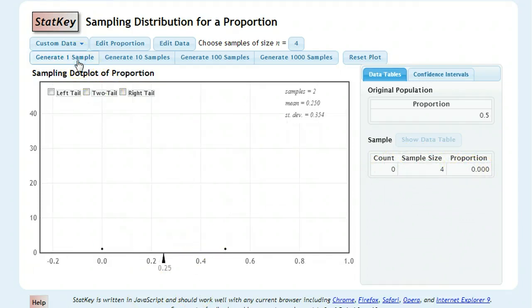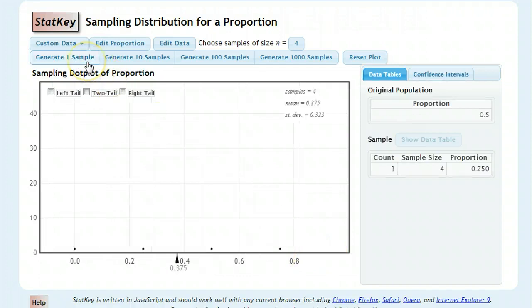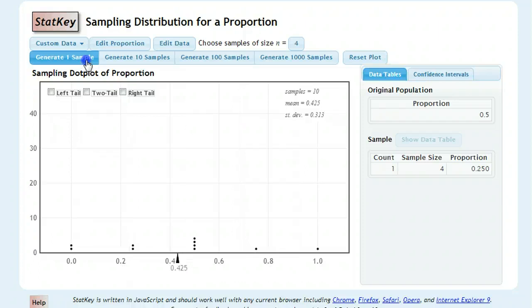Let's generate another sample. Ooh, 0 out of 4. So this one picked a group of all females. That might happen. Generate another one. 3 out of 4. 0.75. And so forth. And you can keep doing this over and over and over, and you're going to get different results every time you do it.